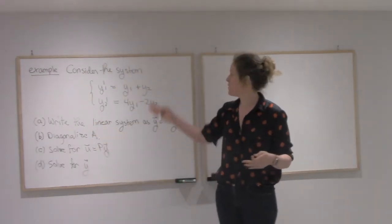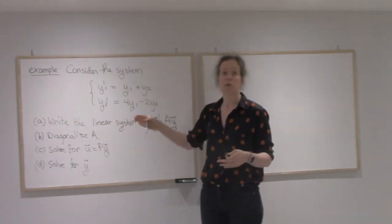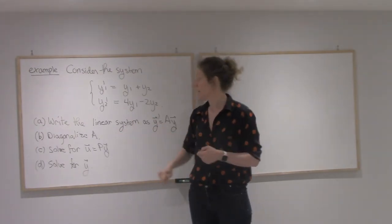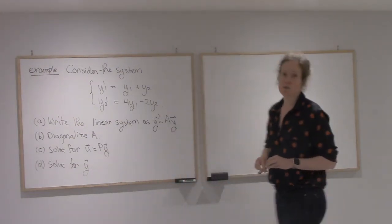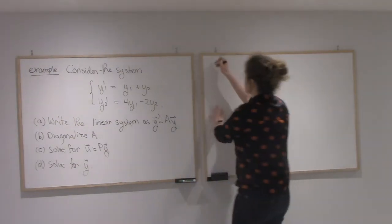Alright, so this is the method you should use whenever you have a system like this. You should always diagonalize A and then solve for the system with a diagonal matrix and then go back to your original system. Alright, so let's start.